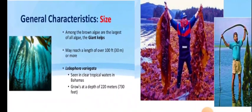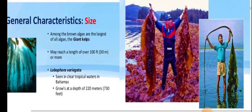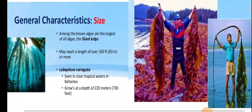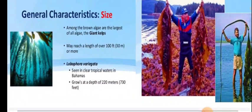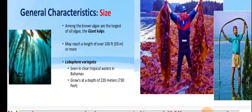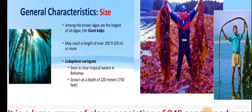These are also commonly called giant kelp. You can see the person in the center of the two photographs. These are larger forms generally seen in the oceanic area. Lobophora variegata is commonly found in tropical waters and may reach up to 100 feet, that is 30 meters, in length.